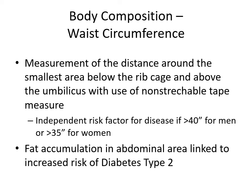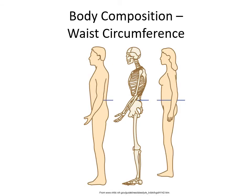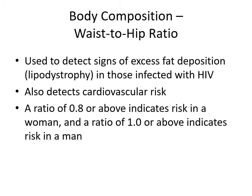Waist circumference measures the distance around the smallest area below the rib cage and above the umbilicus using a non-stretchable tape measure. An independent risk factor for disease exists if over 40 inches for men and over 35 inches for women, as abdominal fat accumulation is linked to increased risk of type 2 diabetes. Waist-to-hip ratio can detect signs of excessive fat deposition (lipodystrophy) in those infected with HIV and cardiovascular risk — a ratio of 0.8 or above indicates risk in women, and 1.0 or above indicates risk in men.